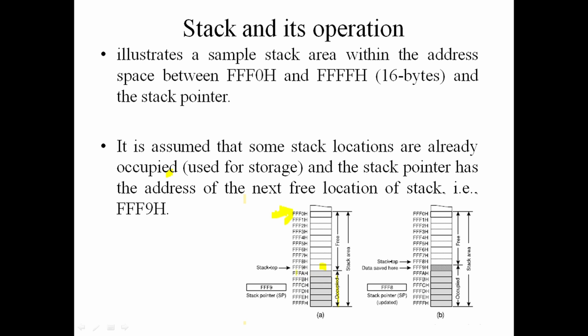For example, address FFF9 is saved in the stack pointer. FFFA already has saved data and is occupied. FFF9 is now the current stack pointer location. In the second figure, FFF9 is saved and data is pushed further to FFF8. The stack pointer address is automatically updated to FFF8 because the current state is stored there.